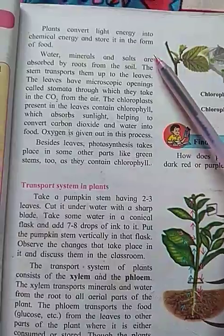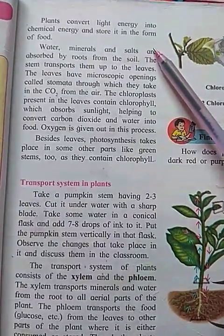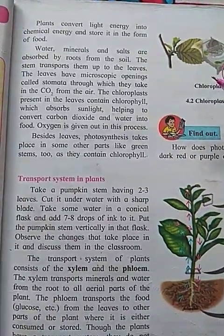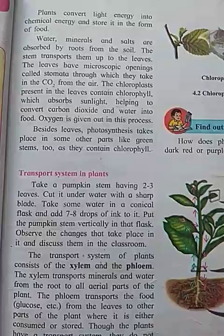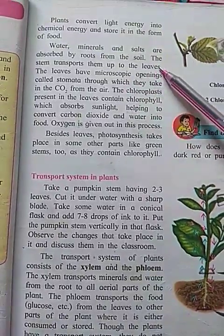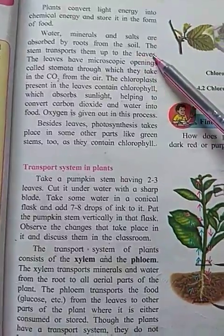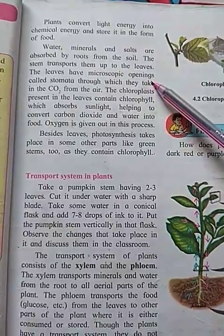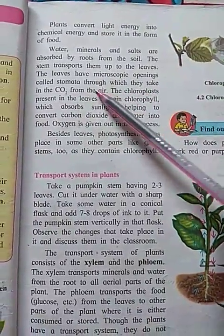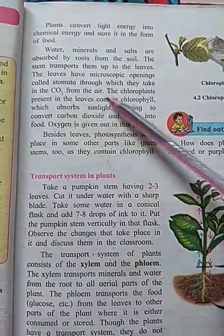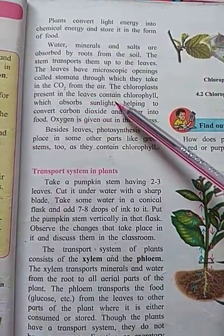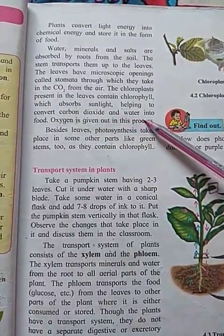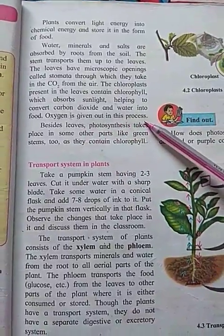Plants convert light energy into chemical energy and store it in the form of food. Water, minerals, and salts are absorbed by roots from the soil; the stem transports them up to the leaves. The leaves have microscopic openings called stomata through which they take in CO2 from the air. The chloroplast present in the leaves contains chlorophyll, which absorbs sunlight, helping to convert carbon dioxide and water into food.